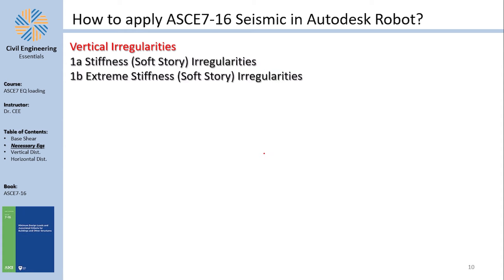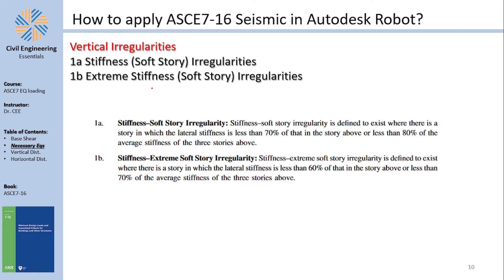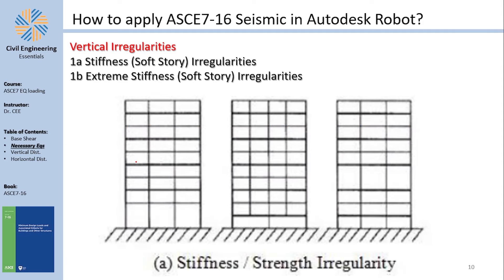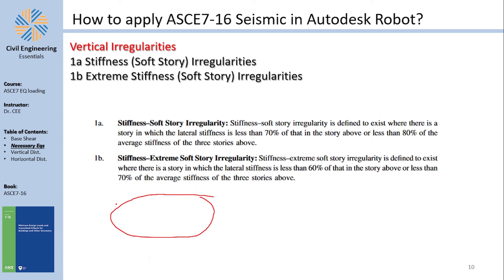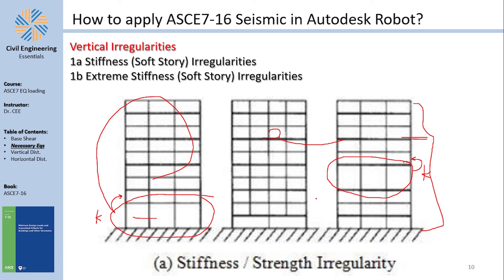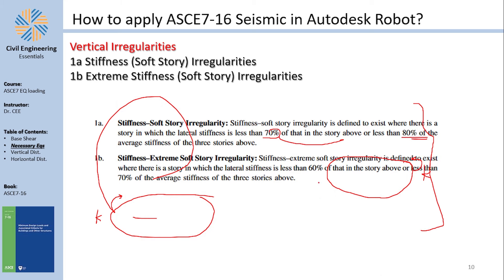Vertical irregularities include stiffness or soft story irregularity (simple and extreme). A soft story irregularity exists if a story's stiffness is less than 70% of the story above it, or less than 80% of the average stiffness of the three stories above. For extreme soft story, the thresholds drop to 60% and 70% respectively.